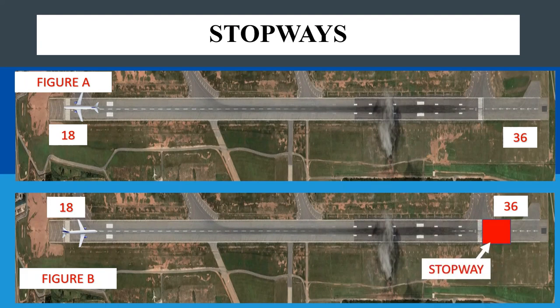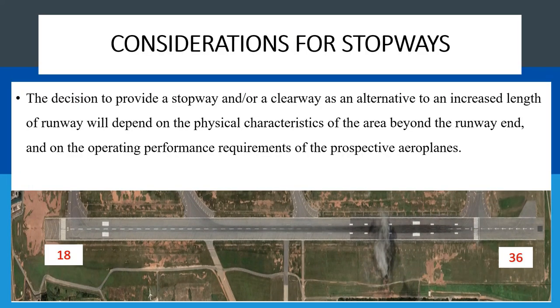Therefore, the area on a displaced threshold will be used as a stopway. This will facilitate any attempt to abort takeoff without causing secondary damage to the aircraft. Another consideration to look out for when deciding to provide a stopway or a clearway as an alternative to an increased length of runway would depend on the physical characteristics of the area beyond the end of the runway.